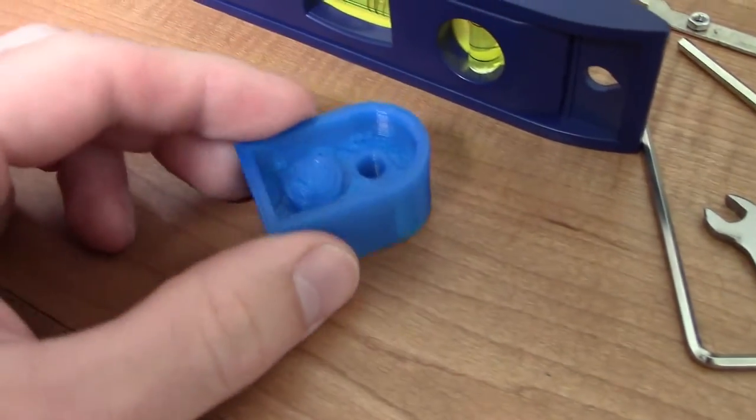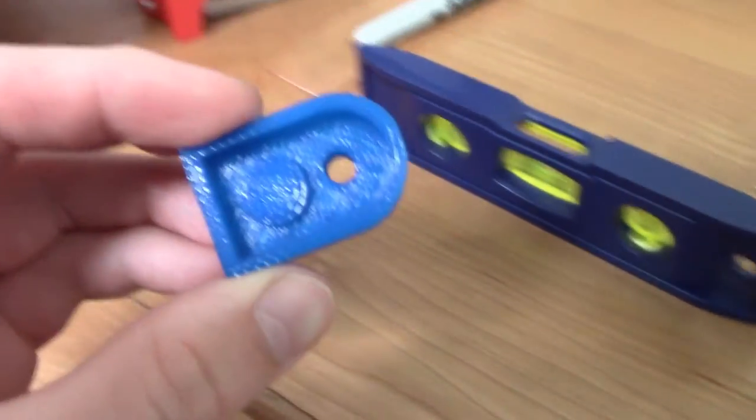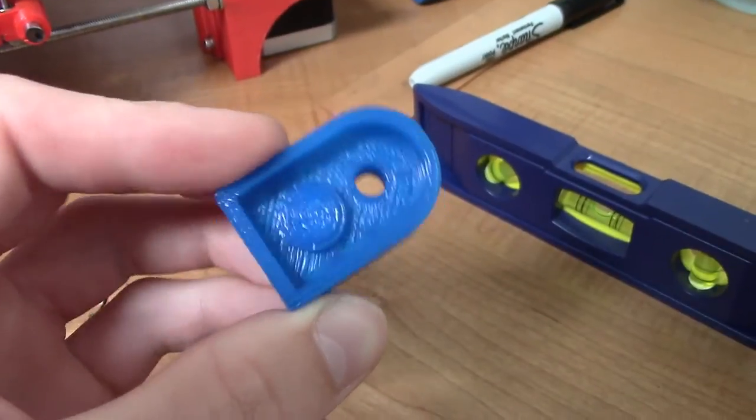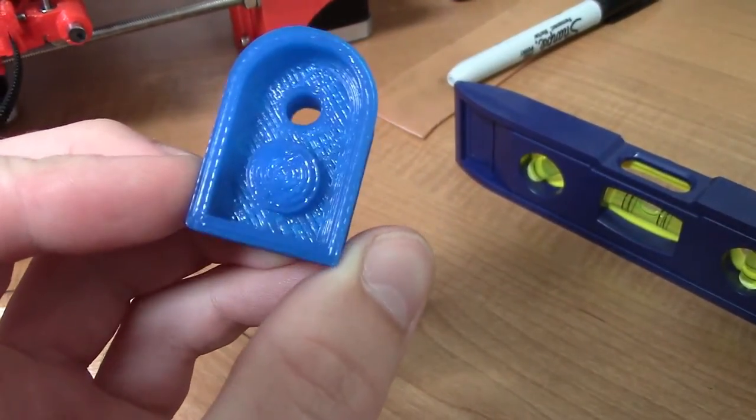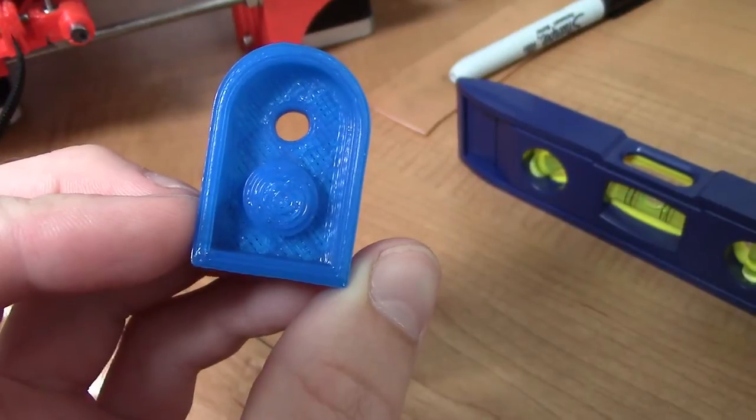Okay, so this right here is the first part that I printed on this Fordibee, and I had some issues with the circles. They weren't printing circular, they're kind of egg-shaped. It's probably hard to see in the video.